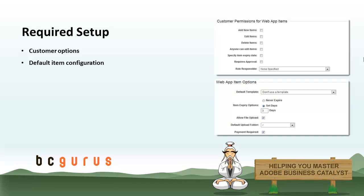There are a couple things you need to do before you can enable user-submitted web apps, and that basically comes down to going to your web app configuration and defining the different relevant fields and their settings — whether or not customers can add items, delete items, and so forth. Some of these options down here can also have an effect on what happens when the web app item is created.